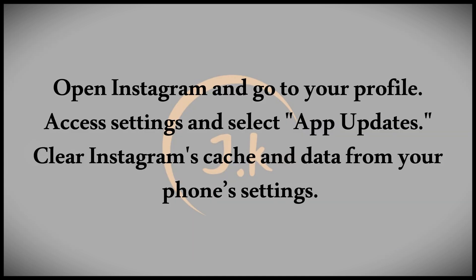First, open the Instagram app and click on your profile icon located at the bottom right corner. Next, tap the three line icon at the top right corner and select Settings and Privacy. Scroll down the page and click on About. From there, select App Updates and ensure the auto update option is turned on. This will keep Instagram updated regularly.